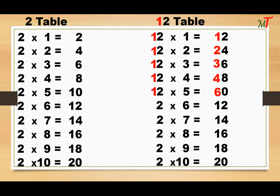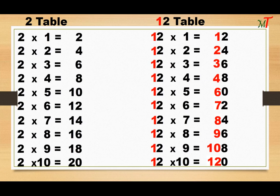5 plus 1 becomes 6 — 12 5s are 60. 6 plus 1 becomes 7 — 12 6s are 72. 7 plus 1 becomes 8 — 12 7s are 84. 8 plus 1 becomes 9 — 12 8s are 96. 9 plus 1 becomes 10 — 12 9s are 108. 10 plus 2 becomes 12 — 12 10s are 120.